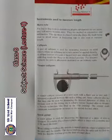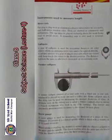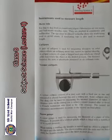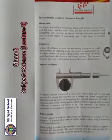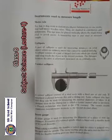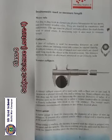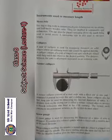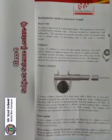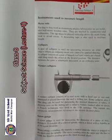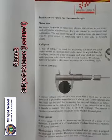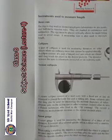Next we have the screw gauge, used for measuring the diameter of a pipe, a piece of wire, and similar small distances. It consists of a screw spindle fitted with a thimble marked with 50 equal divisions. The thimble is turned until the object is gripped very gently between the anvil and the spindle.